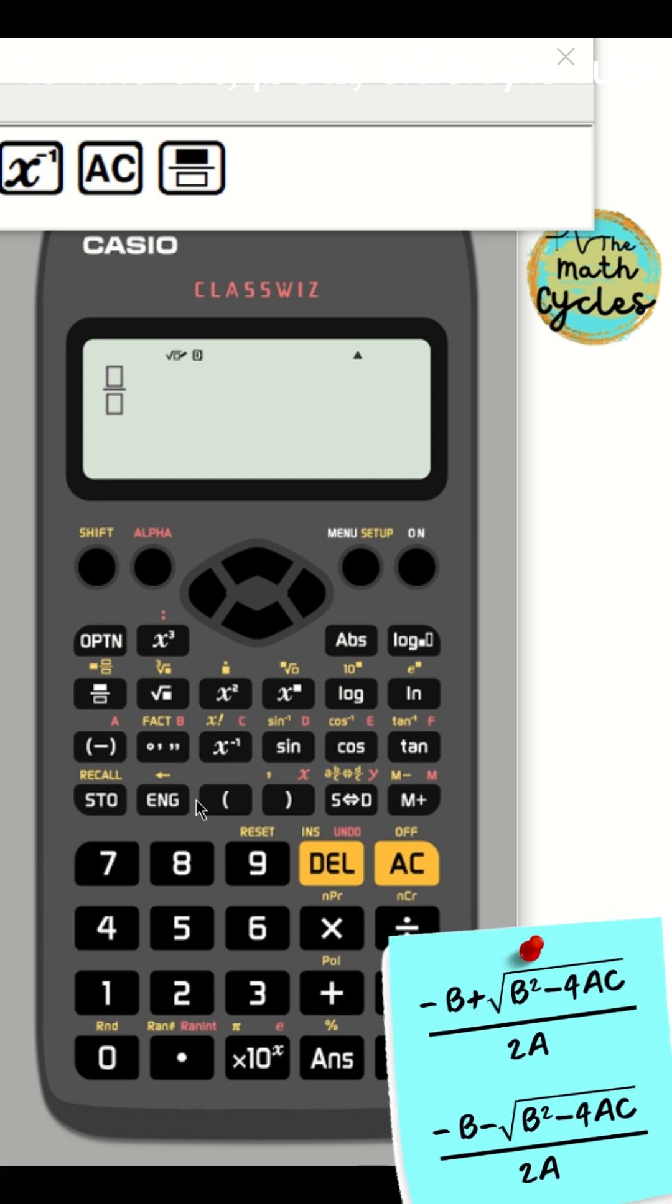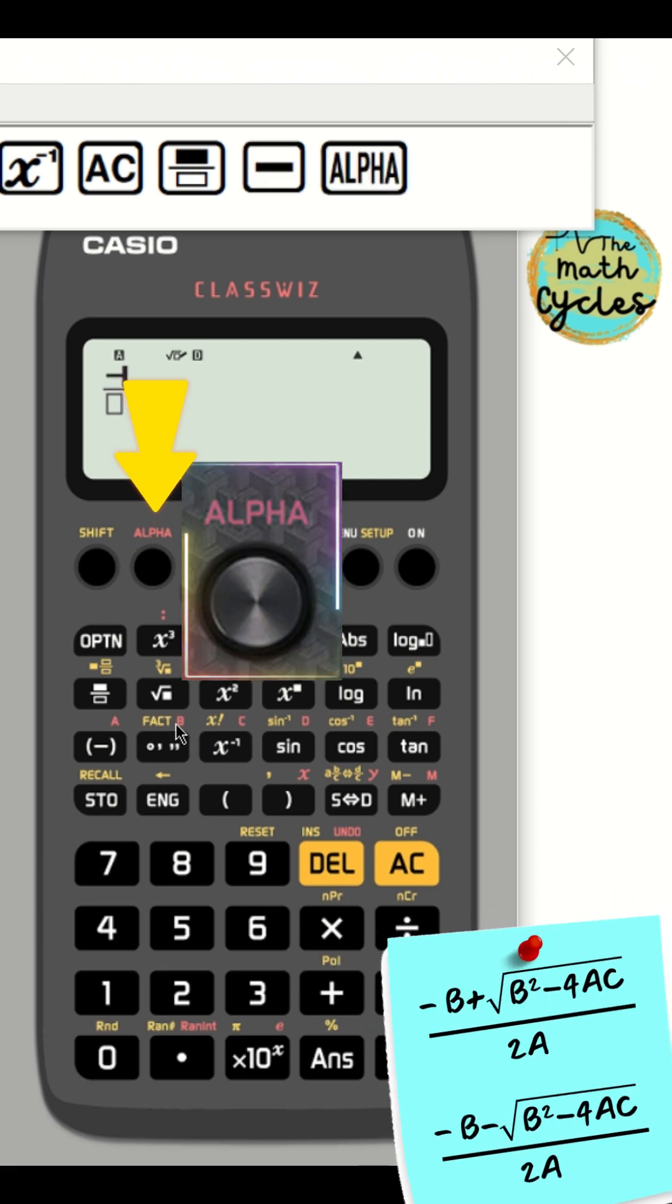To find the roots, enter the rule. Press the fraction key. To get B, click alpha, then B key.